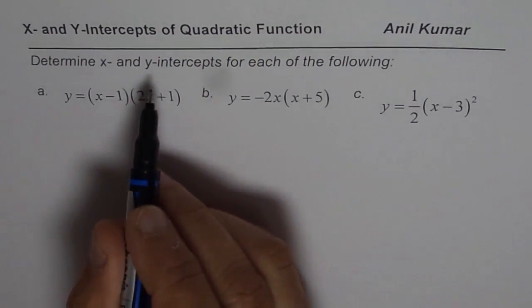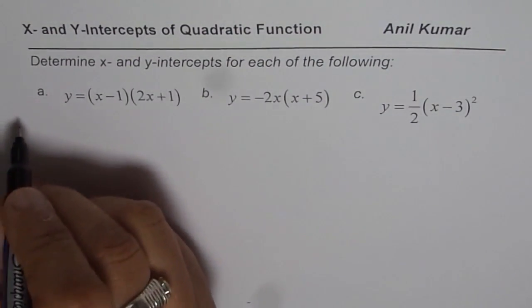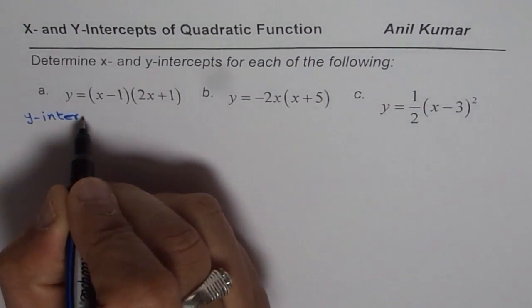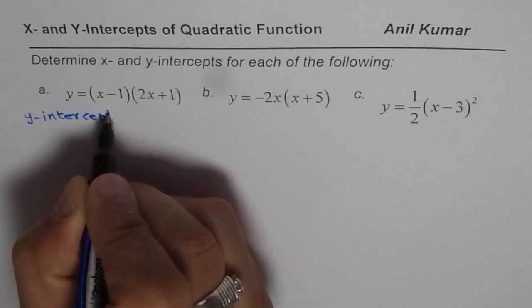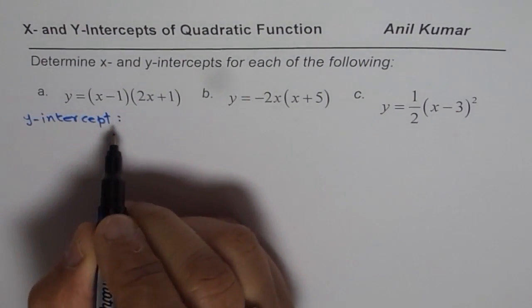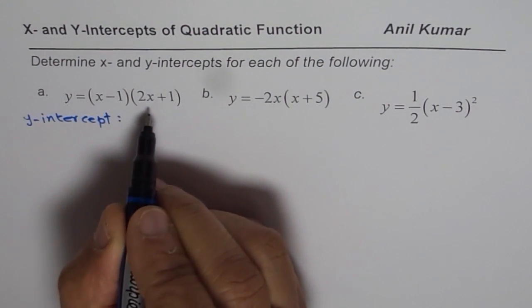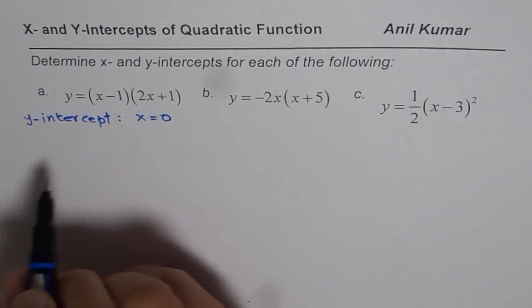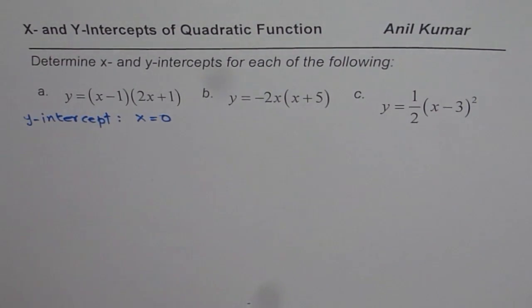Let's begin by finding y-intercept. So when I say y-intercept, it means what? It means a point where the line or the curve of the graph crosses y-axis. At that point x is going to be 0. So let us find y-intercept for all the three and then we will do x-intercepts.